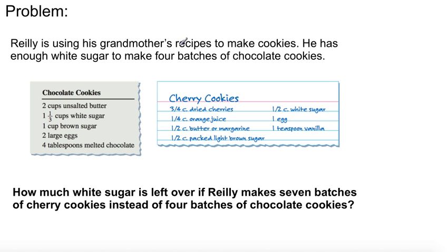Here's our problem. Riley is using his grandmother's recipe to make cookies. He has enough white sugar to make four batches of chocolate cookies — that's 1 and 1 third cups of white sugar per batch. For cherry cookies, he has half a cup of white sugar per batch. How much white sugar is left over if Riley makes seven batches of cherry cookies instead of four batches of chocolate cookies?